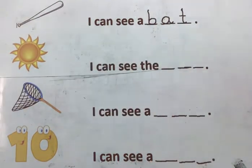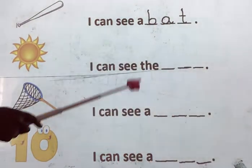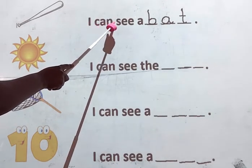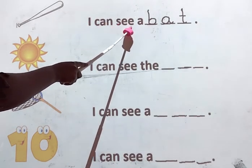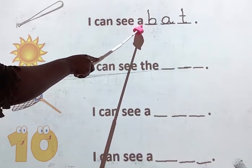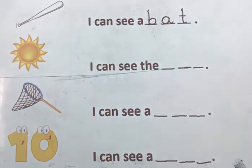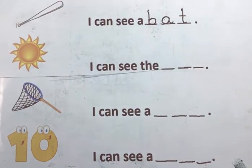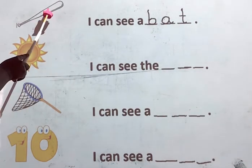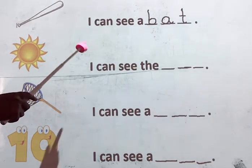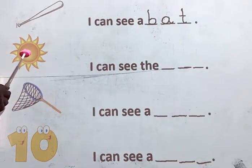Very good. Now let's read the sentence: I, can, see, a, bat. Very good. Can you see a bat? Yes. This is a bat.